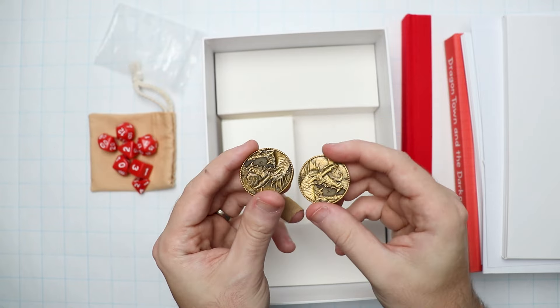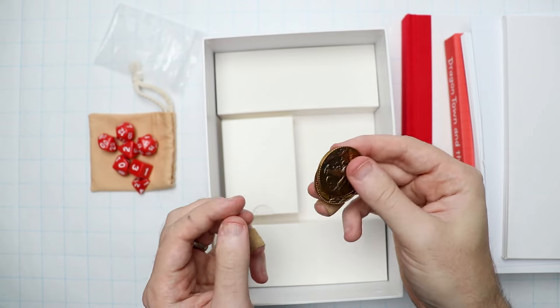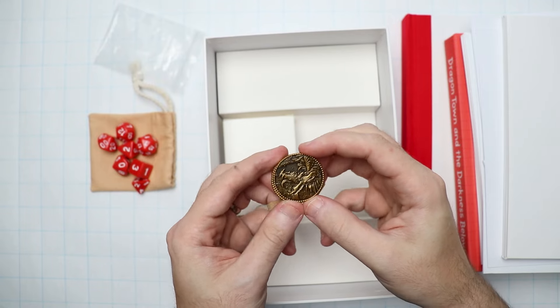And then the other one will have a void spawn and the star heart on the back. One will be gold, one will be silver. So they'll kind of be a little bit different than these coins. Same kind of idea.